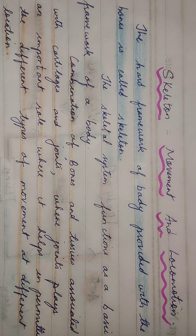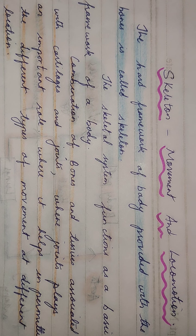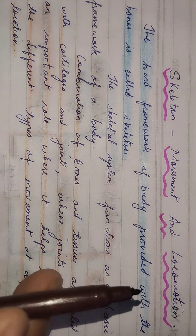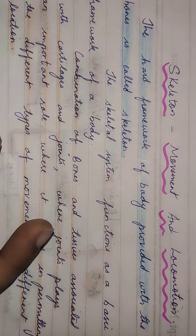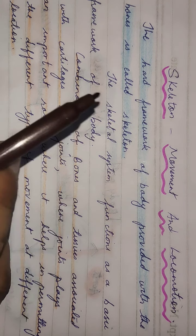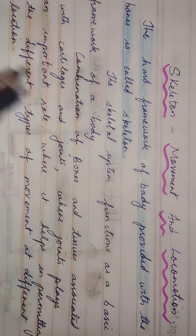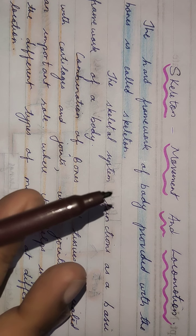Let us understand movement and locomotion. Movement means when an organism moves from one location to another. Locomotion means the ability of a body to move from one place to another — a change in position. In the case of movement, there is no change in position; for example, circulation of blood is movement. But locomotion means moving from here to Darjeeling — that is locomotion.